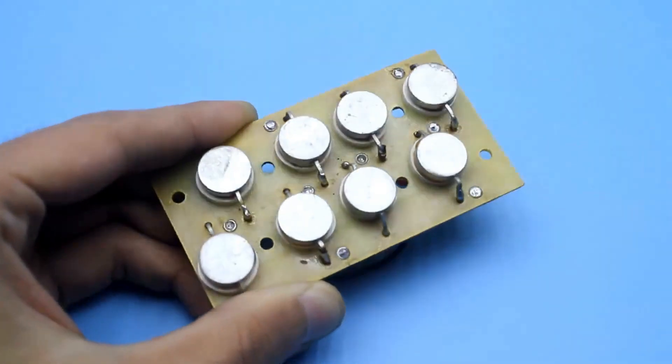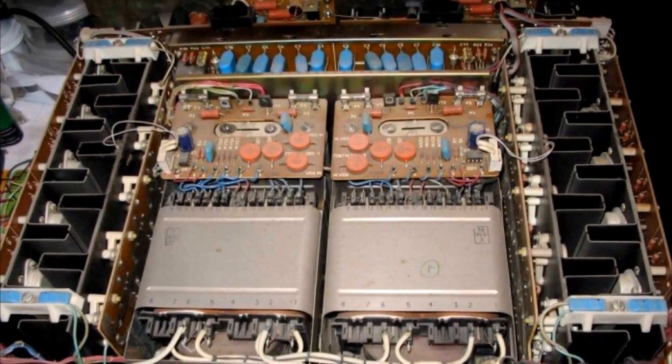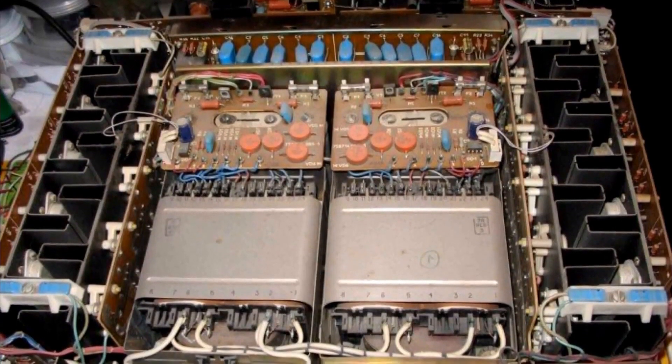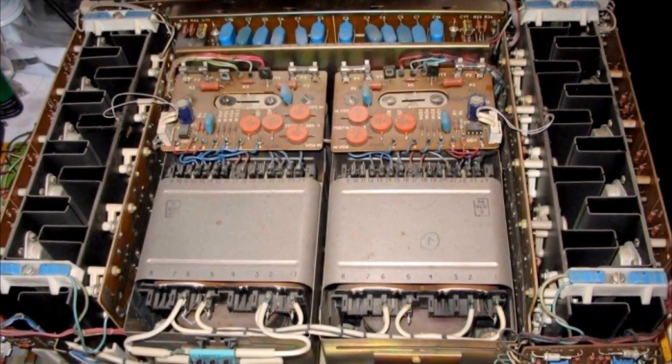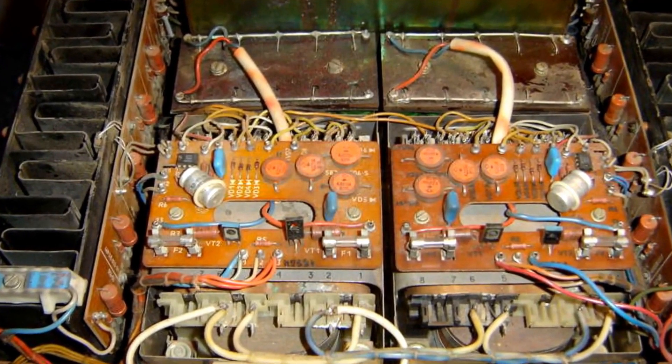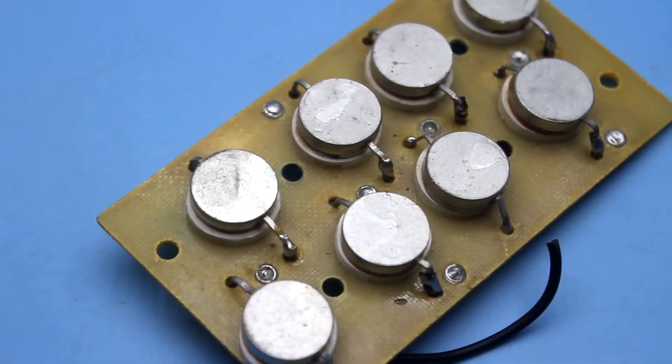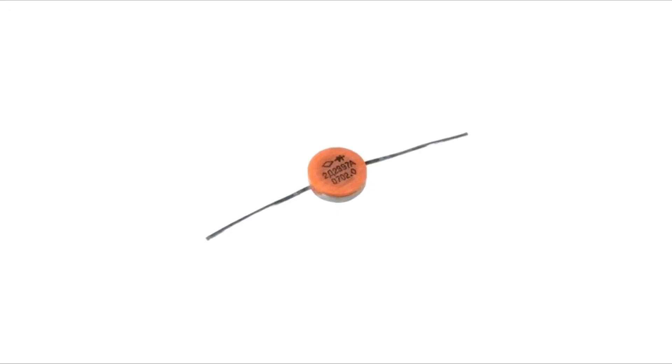Diodes KD213 and D2997 were very often used in power amplifiers. They worked there as rectifiers of alternating voltage from the secondary windings of the power transformer. The diodes were simple in design, compact, and had very good parameters. They were also used in military equipment. They were marked as 2D.